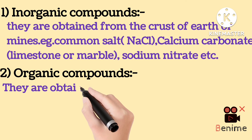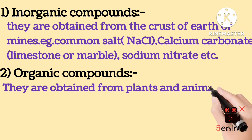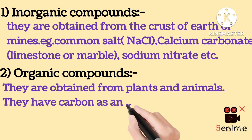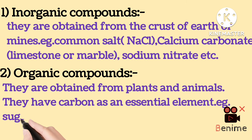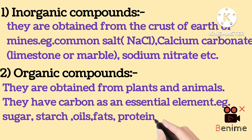Organic compounds are obtained from plants and animals. They have carbon as an essential element. For example, sugar, starch, oil, fat, protein, acetic acid.